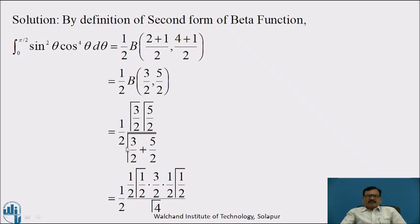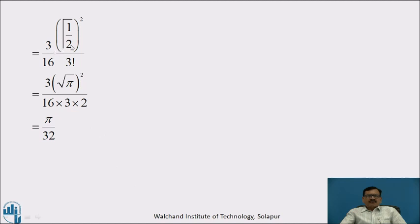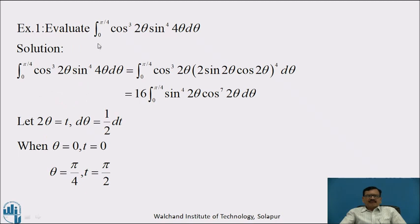This equals (1/2) · Γ(3/2) · Γ(1/2) · Γ(3/2) · Γ(1/2) divided by Γ(4). Simplifying, we get (3/16) · [Γ(1/2)]² and Γ(4) equals 3! = 6. Since Γ(1/2) equal to √π, we get (3 · π) / (16 · 6), which simplifies to π/32.